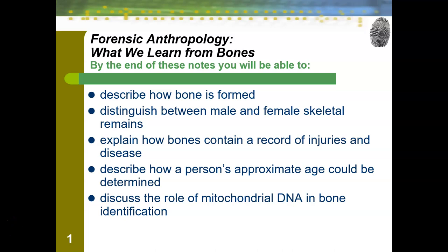In these notes, we're going to be learning about forensic anthropology. By the end of these notes, you will be able to describe how bone is formed, distinguish between male and female skeletal remains, explain how bones contain a record of injuries and disease, describe how a person's approximate age can be determined, and discuss the role of mitochondrial DNA in bone identification.